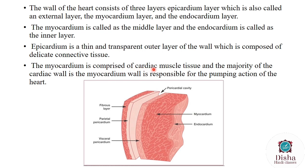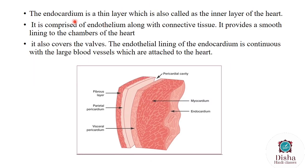The myocardium is comprised of cardiac muscle tissue and makes up the majority of the cardiac wall. The myocardium layer is responsible for the pumping action of the heart. The endocardium is a thin layer, also called the inner layer of the heart. It is comprised of endothelium along with connective tissue. The endocardium also covers the valves and large blood vessels which are attached to the heart.